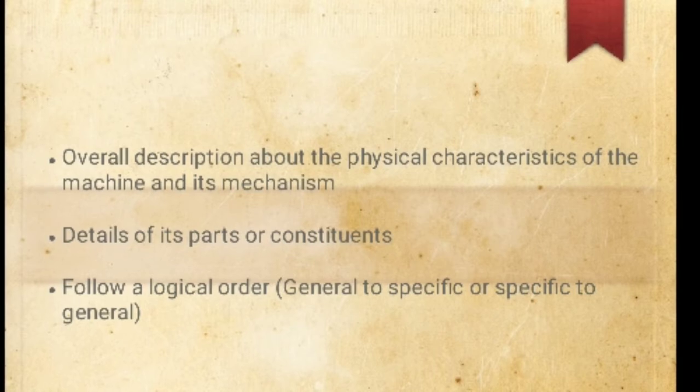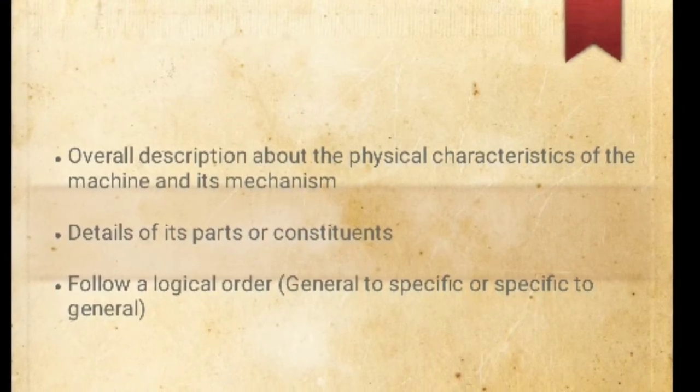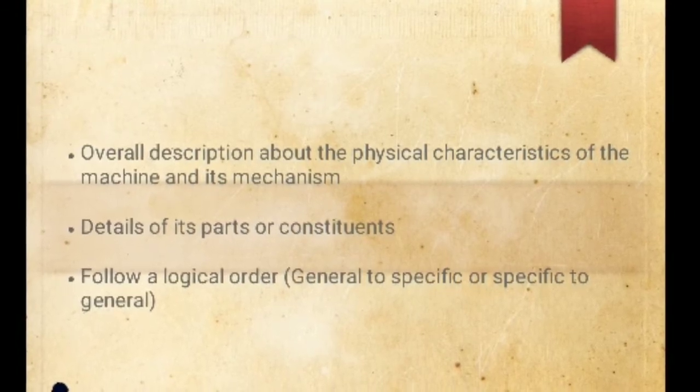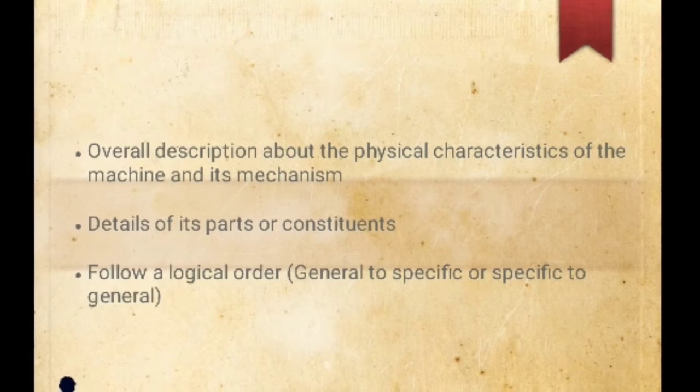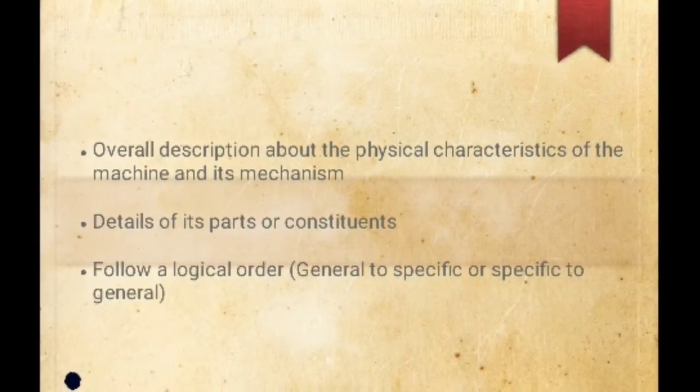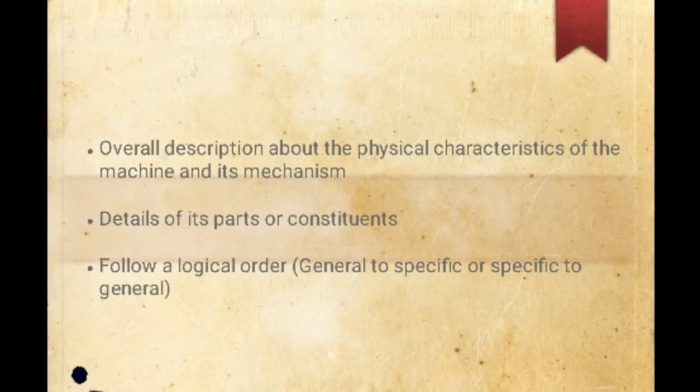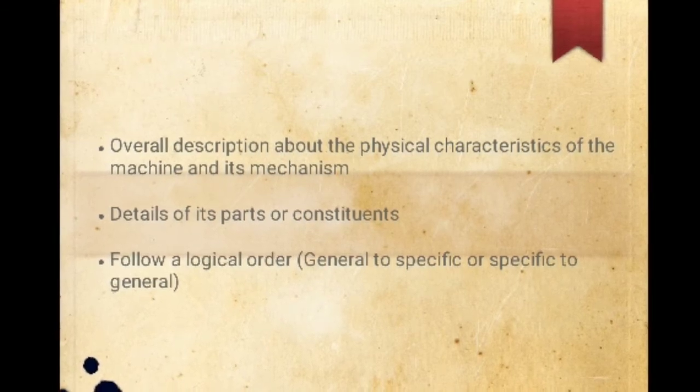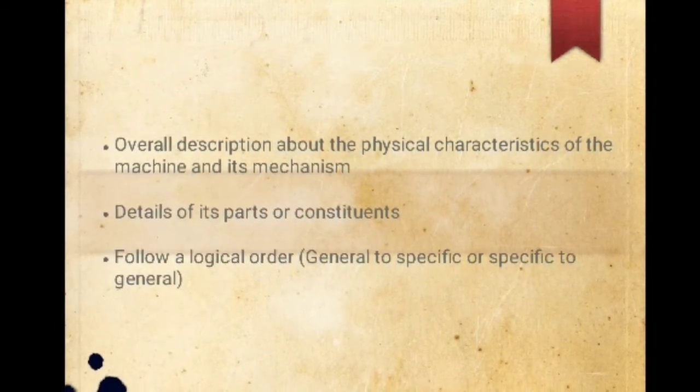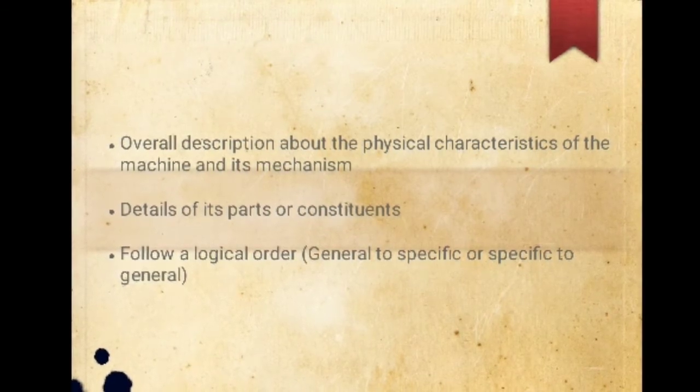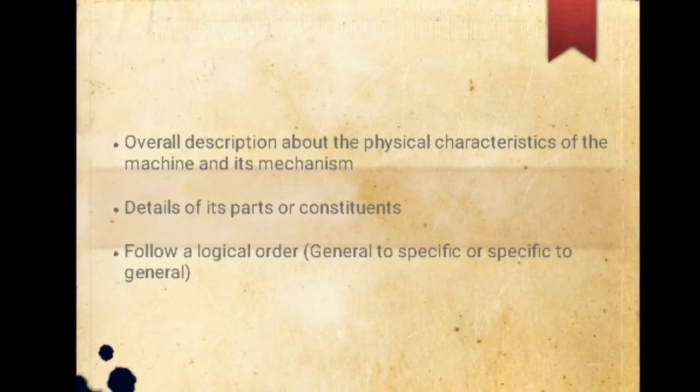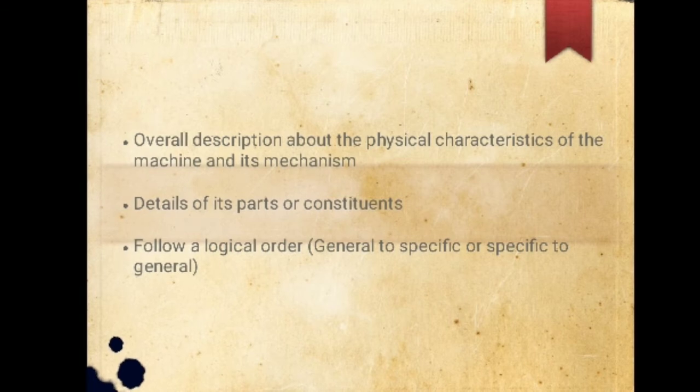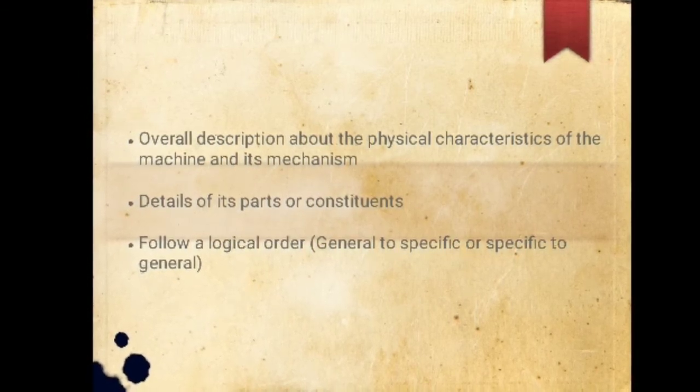Now what is general to specific? For example, if you want to define water to any layperson, then you will define that it's a liquid used for drinking purposes or for various household chores. And if you want to be specific, then you will have an audience who are literate or educated or have a science background, then you can tell them what water is: a molecule made up of two molecules of hydrogen and one molecule of oxygen. This is specific. So this is how you either start the description with general to specific or be specific and then go to general.